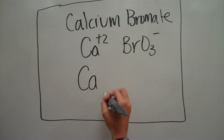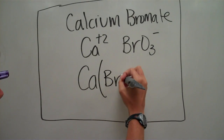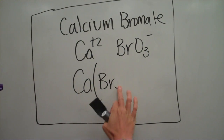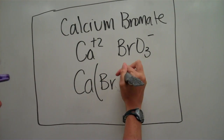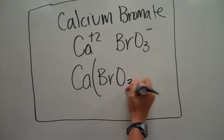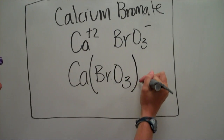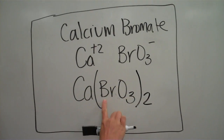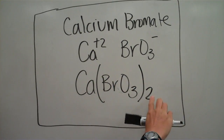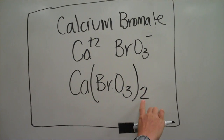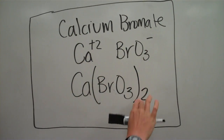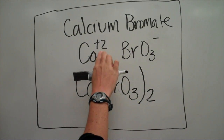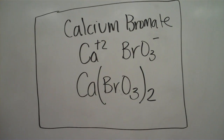Our parentheses rule applies here too. So we write calcium, then parentheses around bromate — BrO₃ — and we need two of those, giving Ca(BrO₃)₂. The whole bromate group gets multiplied, so we get two negatives balancing two positives.